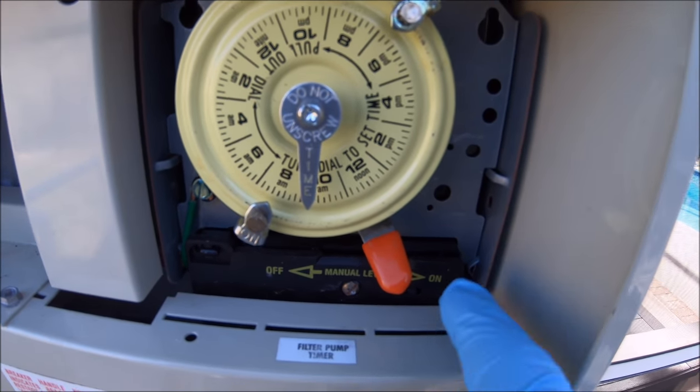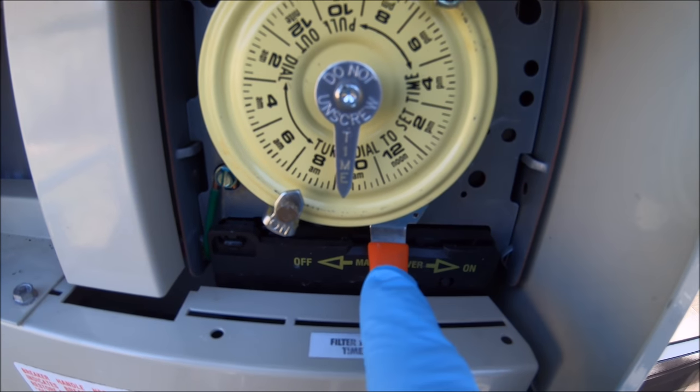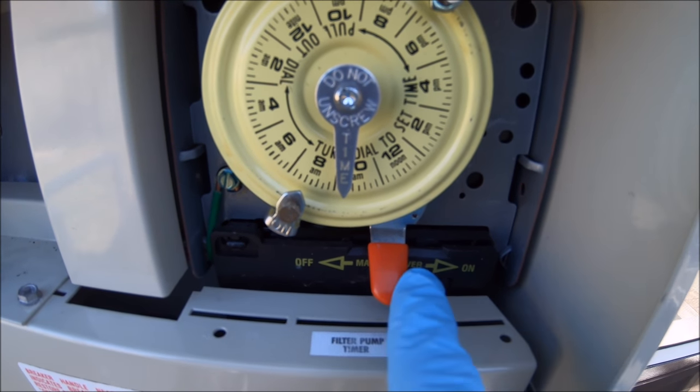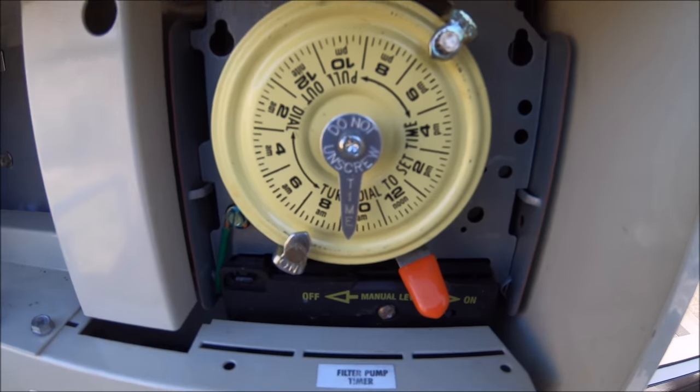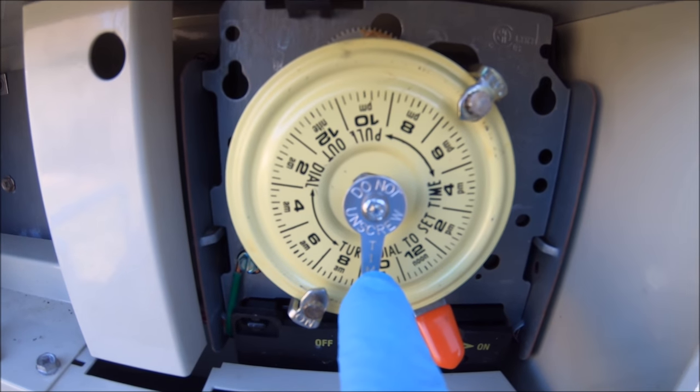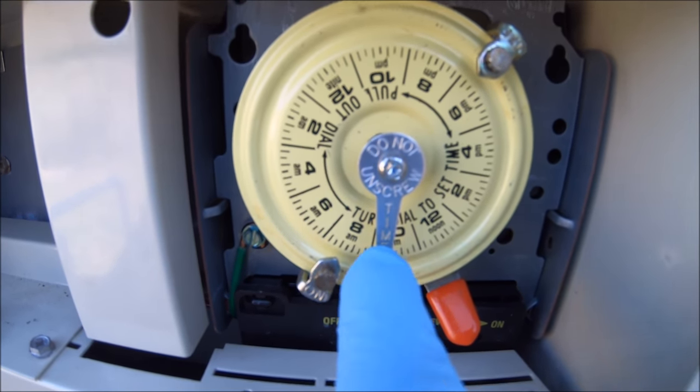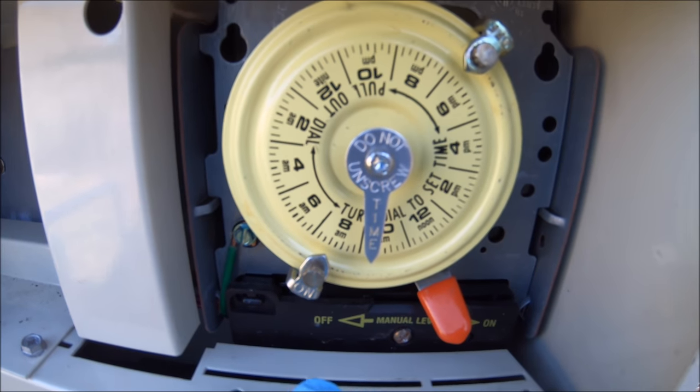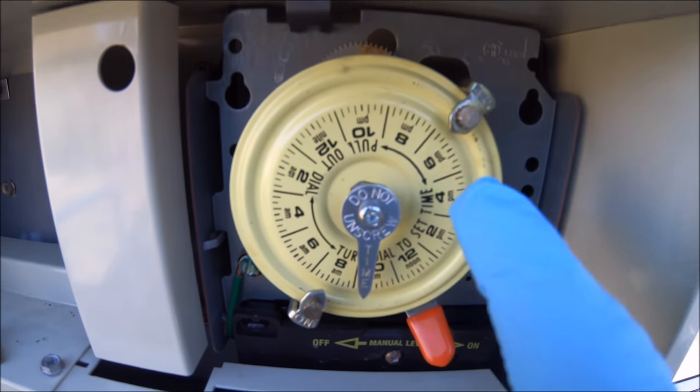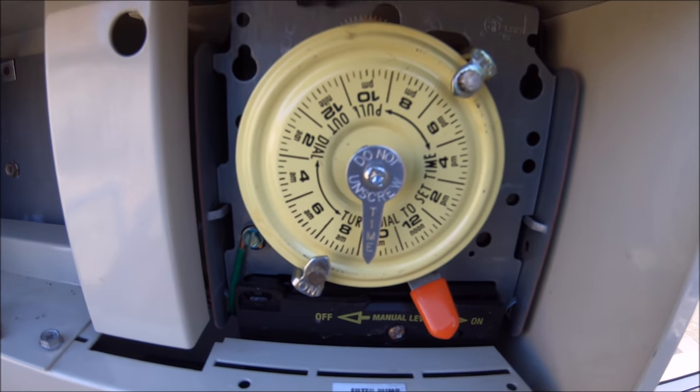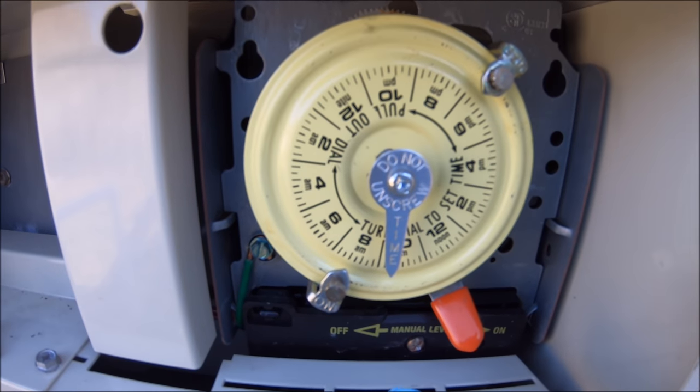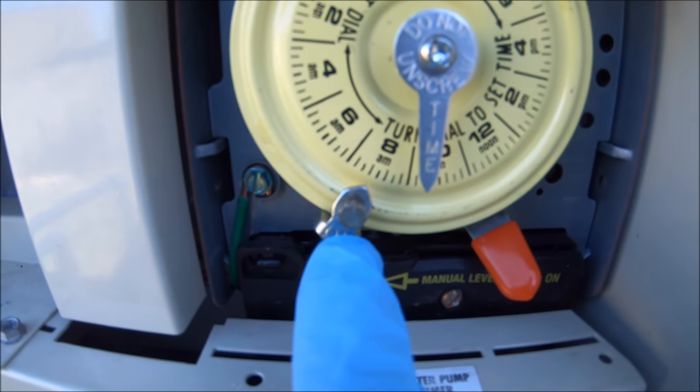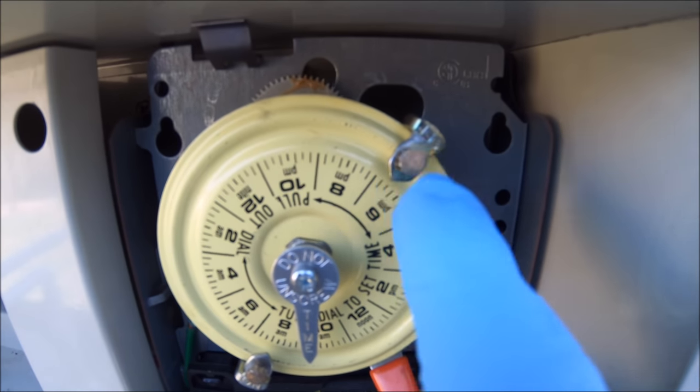You have an on and off button here. That's how you turn the pool on or off. Then you have an arrow that says time, and you have two trippers - an on tripper and an off tripper. This one turns on the pool and this one turns off the pool.